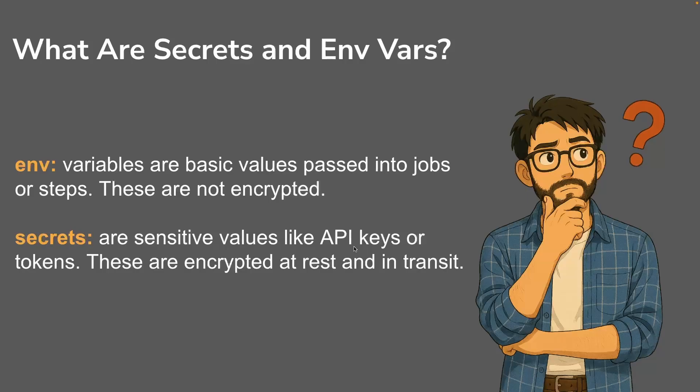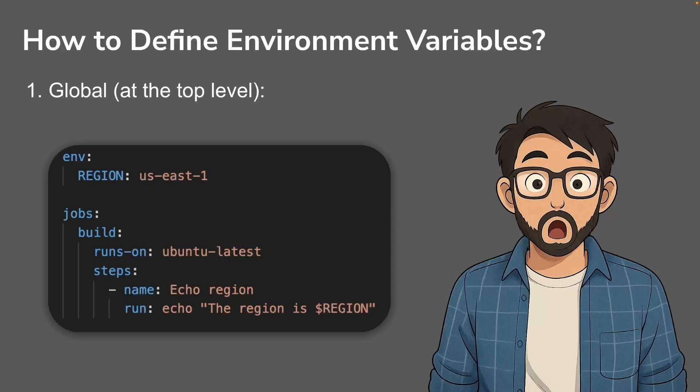First, what's the difference between environment variables and secrets in GitHub Actions? Environment variables are basic values passed into jobs or steps and are not encrypted, whereas secrets are sensitive values like API keys, tokens, passwords, etc. — these are encrypted at rest and in transit. Use environment variables for things like app names, regions, or config flags, and use secrets for things like GitHub tokens, API keys, and passwords.